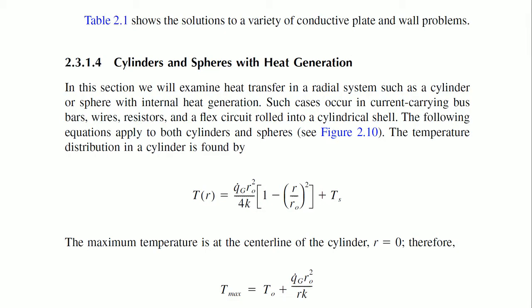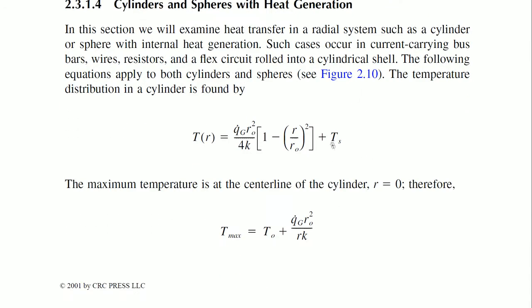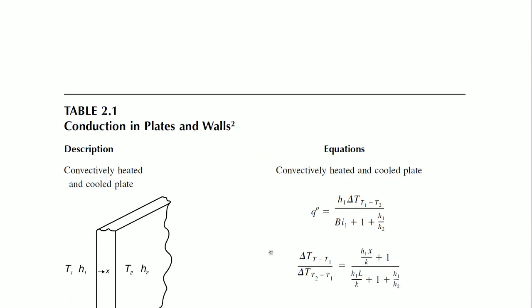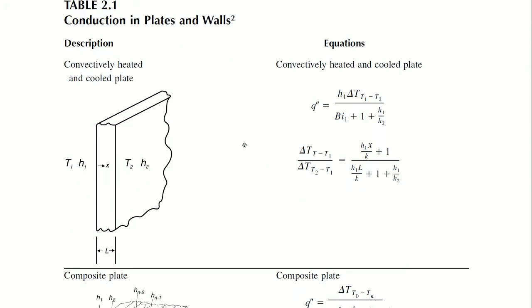As you increase the cross section, the resistance comes down and the total internal heat generation is less. If you have a very thin section or a kink or dent, the whole thing will break down. So we have these relations here for how these things work. In general, we have conduction in plates and walls.